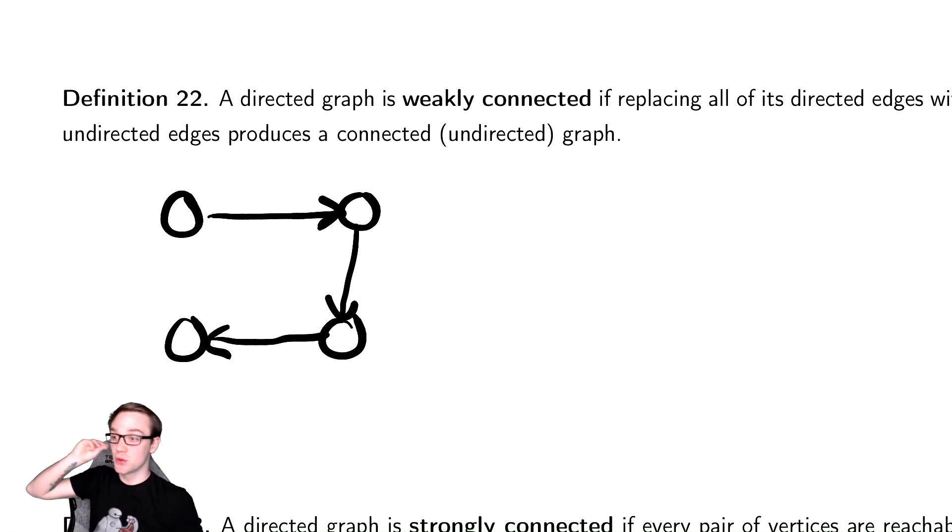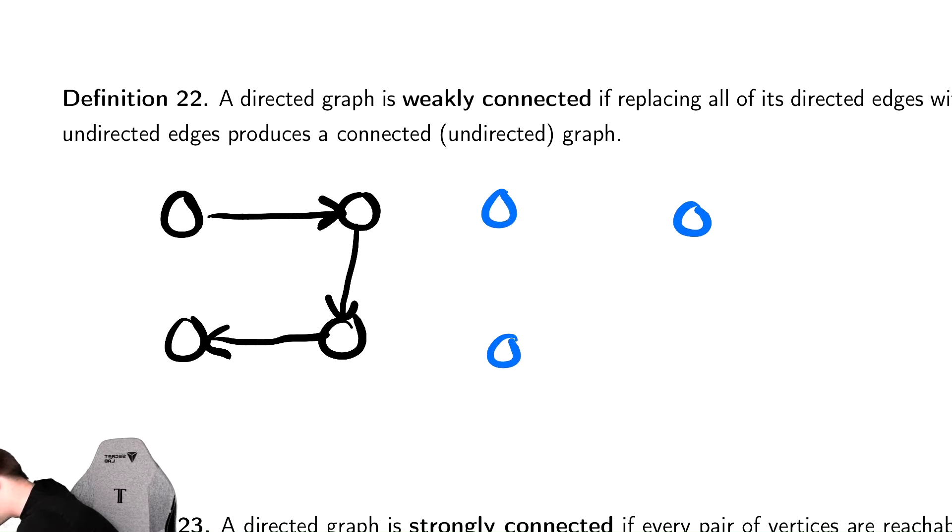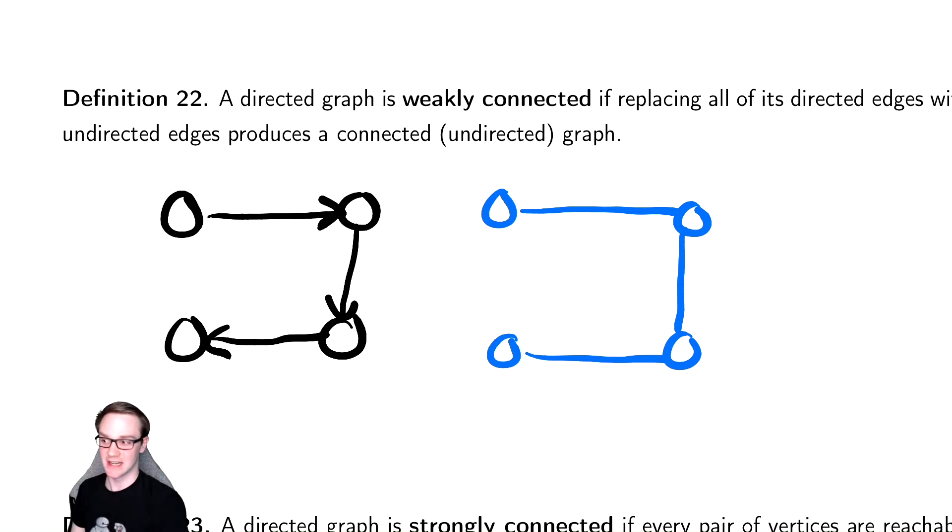So this is what we call weakly connected. It means that if you were to just not draw the arrows instead, so if we drew the following graph where all of the arrows become just lines, is it still connected? If yes, then it is weakly connected. So this is a weakly connected graph.